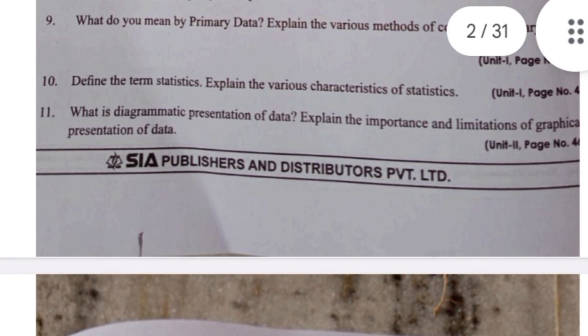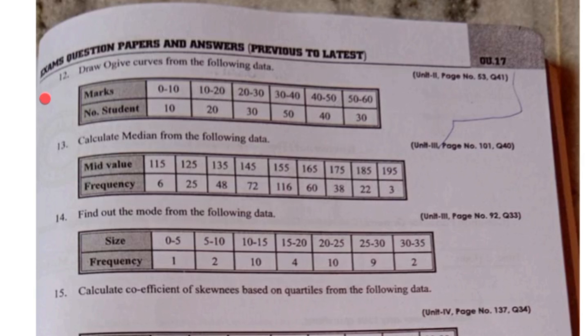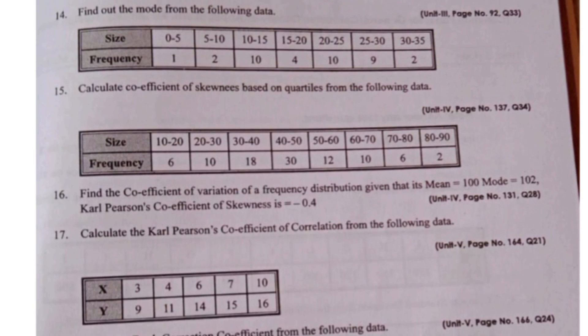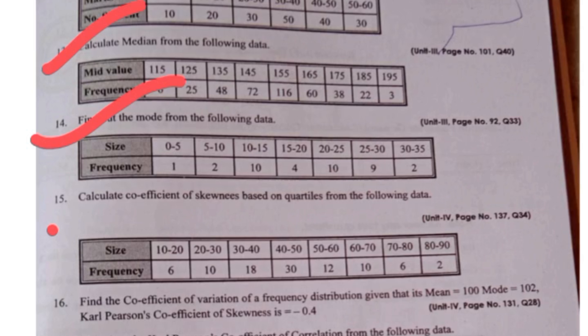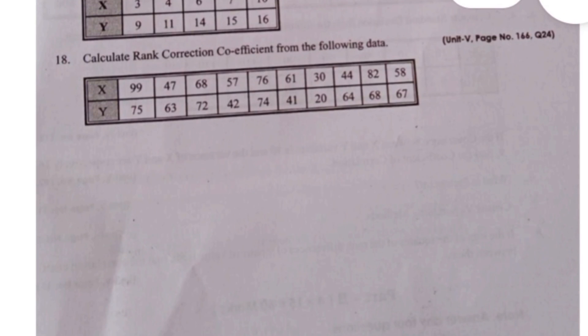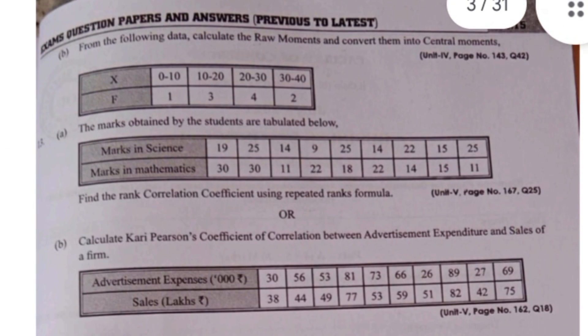As I have already discussed with you all, second unit you will get ogive curves, whatever diagrams you are having like ogive curves, pie diagram like that. You will get from second unit. From third unit median and mode, and fourth unit is Karl Pearson's coefficient of skewness, and fifth unit is either rank correlation or Karl Pearson coefficient of correlation.